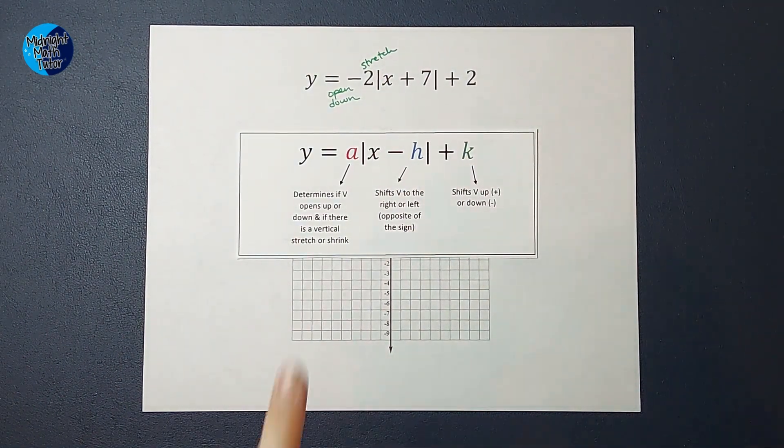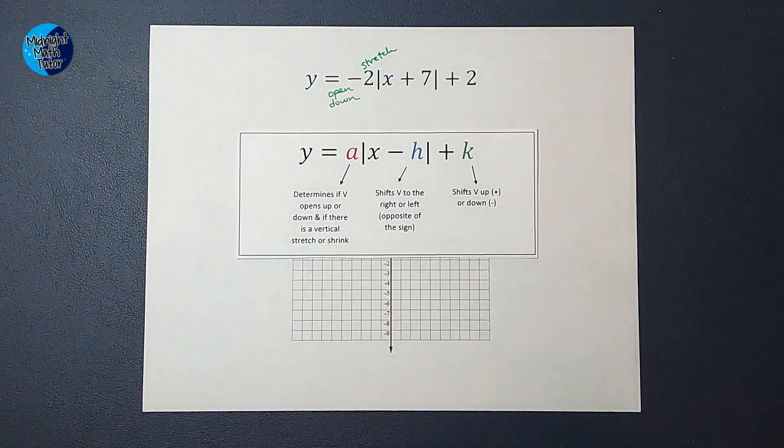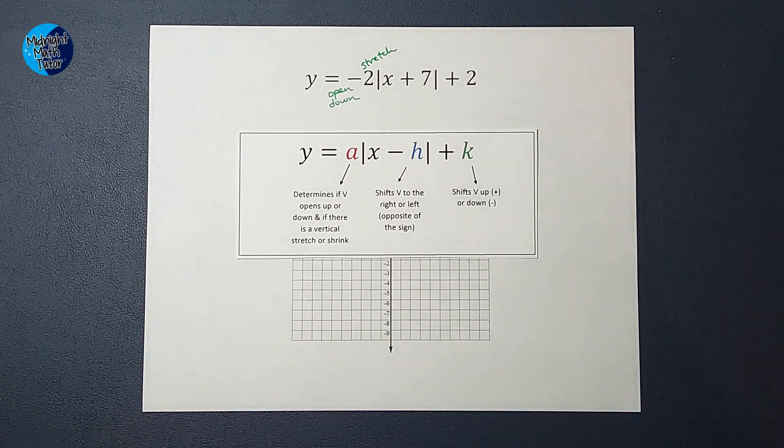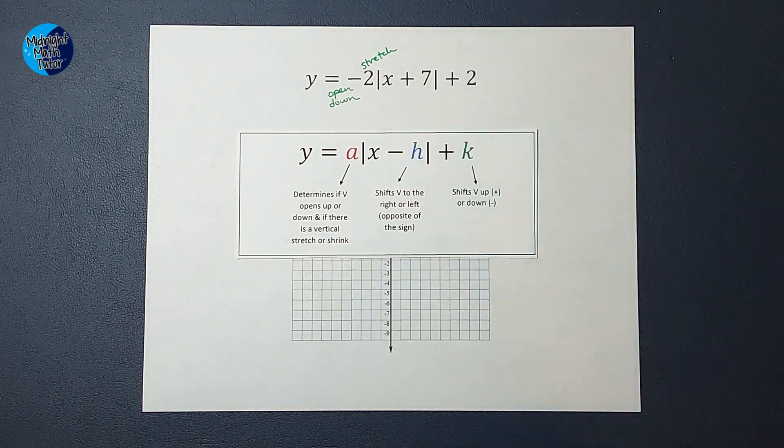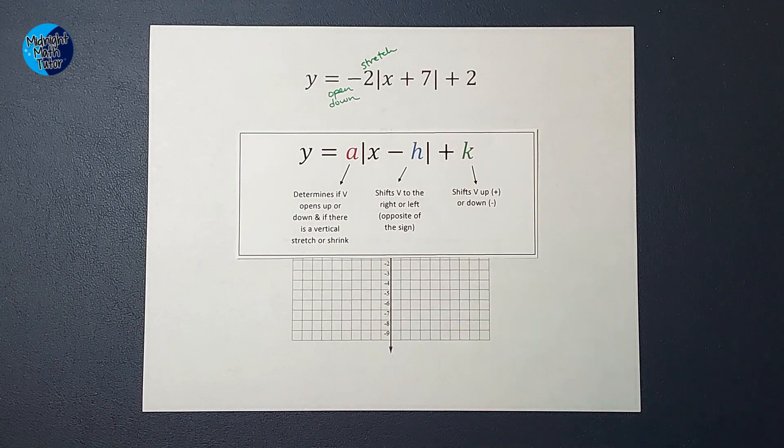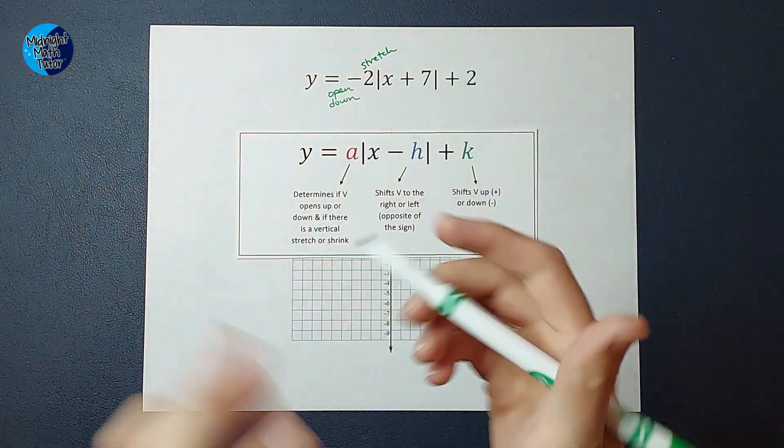Now, these numbers here tell me where my graph shifts. The number inside the absolute value bars tells me left and right. The one outside tells me up and down. This one, since it is a positive 7, we actually do opposite of the sign in this case. So you might think to the right 7, but we do opposite, so we're actually going to go to the left 7.